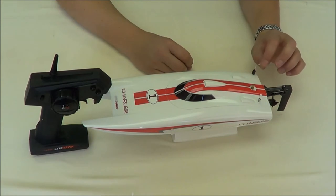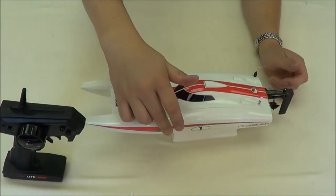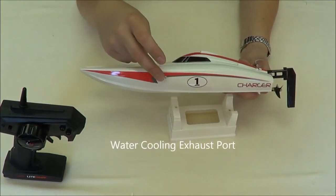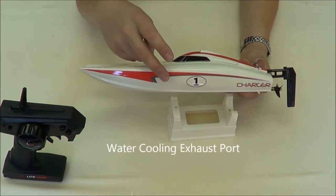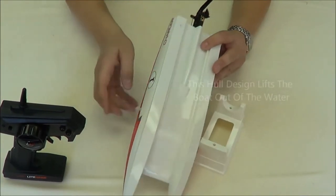Notice here on the left side of the boat, you'll see a little rubber tube exiting from the side. That is actually the water cooling system, where the water is going to exit. I'm just going to flip this boat over here to show you.